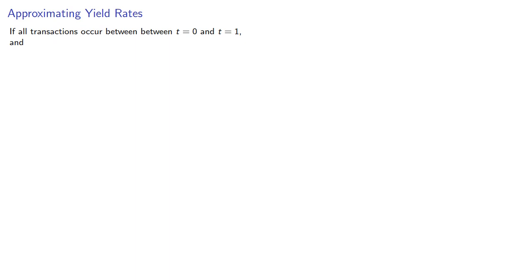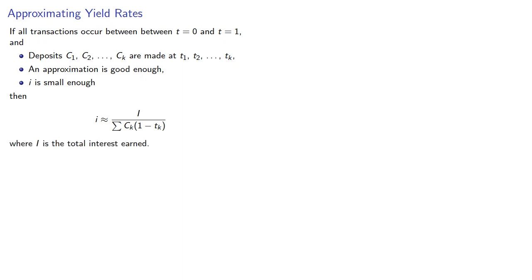If all transactions occur between t equals 0 and t equals 1, and deposits c1 through ck are made at times t1 through tk, an approximation is good enough and i is small enough, then the yield rate can be approximated by where capital I is the total interest earned.